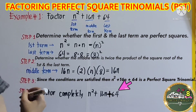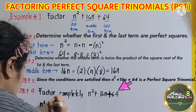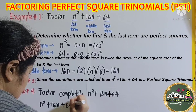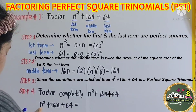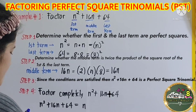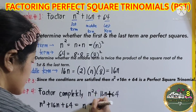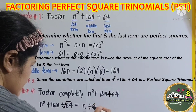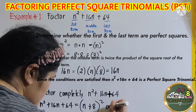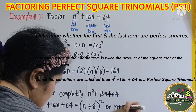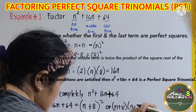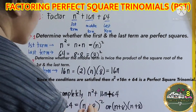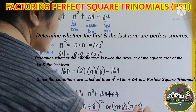Step 4: factor completely n squared plus 16n plus 64. This equals the square root of the first term, which is n, plus the square root of the last term, 64, which is 8. Both are positive, so the sign is positive, and then square the binomial. This means that (n plus 8) is multiplied to itself. So you can express your answer as two binomials: the quantity of (n plus 8) times the quantity of (n plus 8).